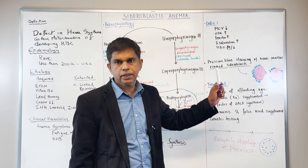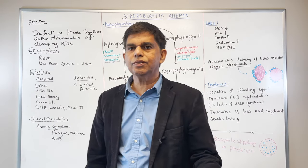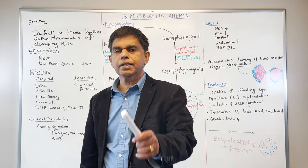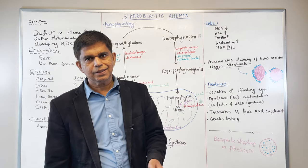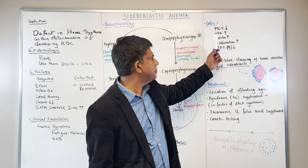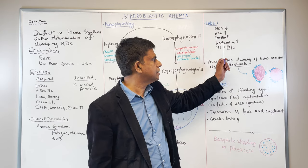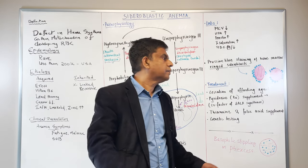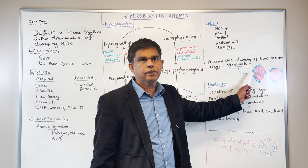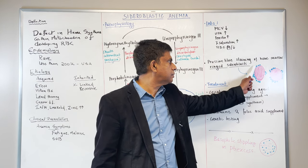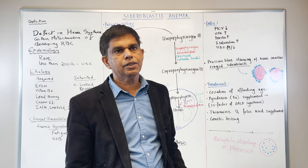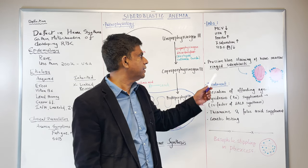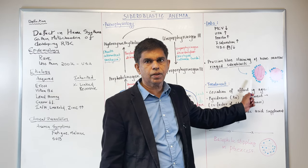Now let's look at lab values. MCV is decreased — normal is 80–100, so less than 80 means microcytic anemia. What are other causes of microcytic anemia? Iron deficiency is the number one cause in the world. In sideroblastic anemia you get increased iron, increased ferritin, increased percent saturation, and decreased TIBC. Most importantly: ring sideroblasts — iron deposited in the mitochondria in a circle around the nucleus. It's not in the cytoplasm; it's in the mitochondria. Prussian blue staining shows the ring sideroblasts in the mitochondria in a circle.